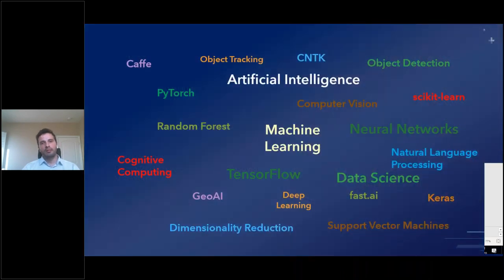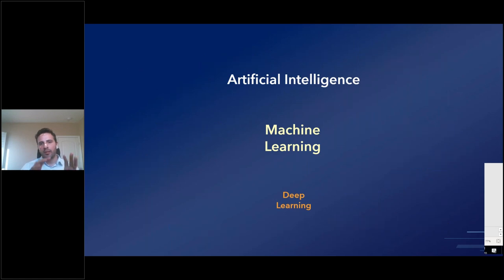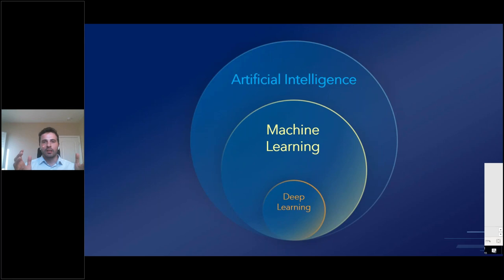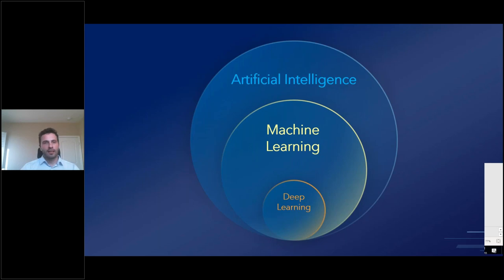Let's set the foundation of what AI, machine learning, and deep learning really are. We keep hearing terms like neural networks, random forests, cognitive computing, and artificial intelligence. It boils down to three main categories: artificial intelligence is the big idea of achieving human-level intelligence, a concept around since the 1950s. Machine learning is one field of AI about learning from data to derive rules and extract patterns. Deep learning is a specific machine learning technique using deep neural networks, very effective for high-dimensional data like computer vision, natural language processing, and voice analytics.